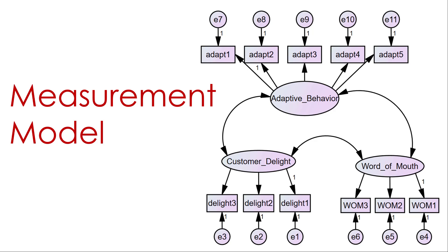The measurement properties are looking really within each construct — did you measure it properly? With adaptive behavior, is it capturing the unobservable construct? Are those items consistent? Is there validity? Do they all converge on that concept, and is it discriminant from other similar unobservable concepts?